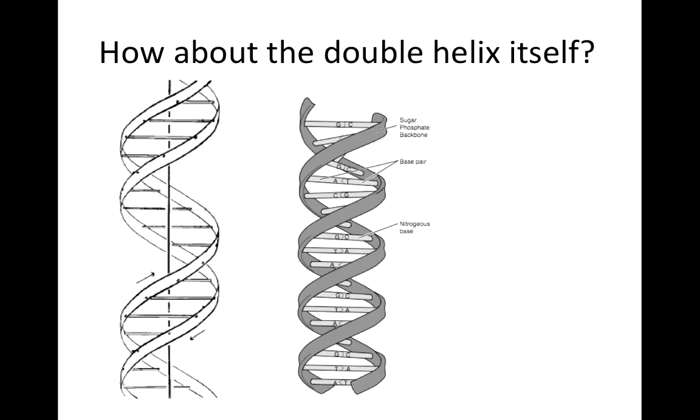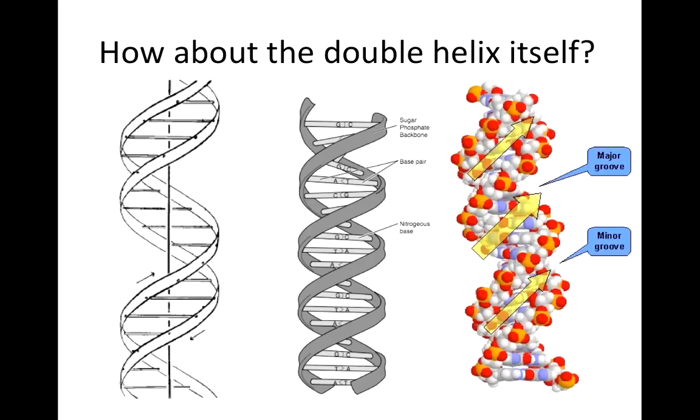This picture is a bit misleading, as the spacing between the turns of the ladder is not equal as it appears to be in this diagram. In actuality, the spacing is unequal, as is shown in the diagram on the left. The smaller distance is known as the minor groove, while the larger distance is known as the major groove.